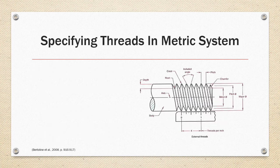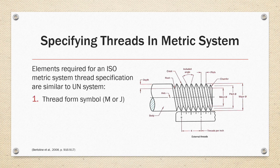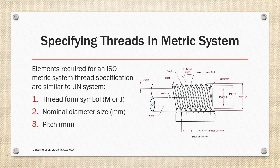Specifying threads in the metric system. Elements required for an ISO metric system thread specification are similar to the UN system. It must be accompanied by a thread form symbol M or JM, standing for metric or modified metric, the nominal diameter size in millimeters, the pitch in millimeters, and general purpose tolerance may also be shown.